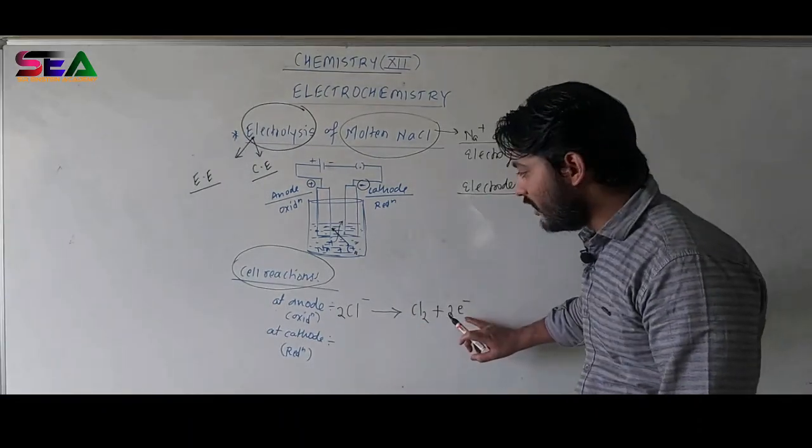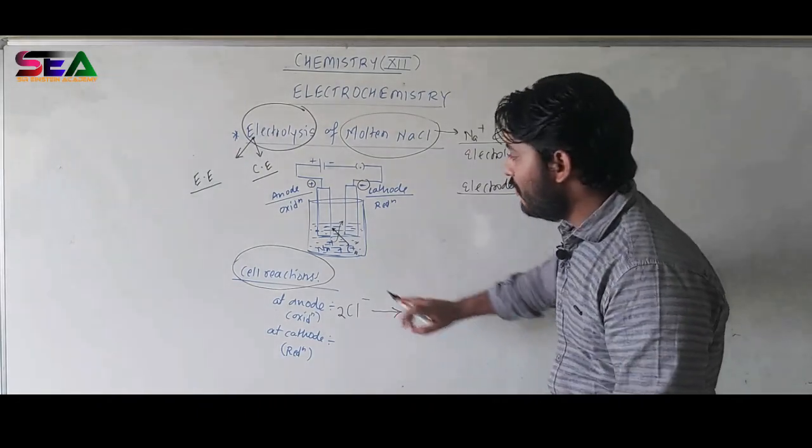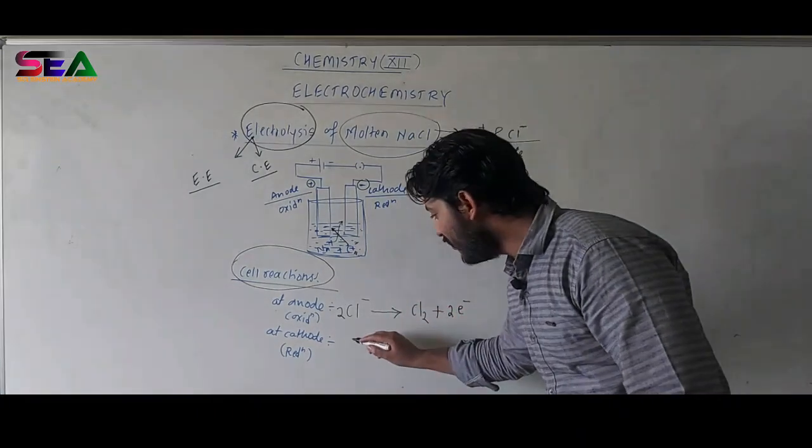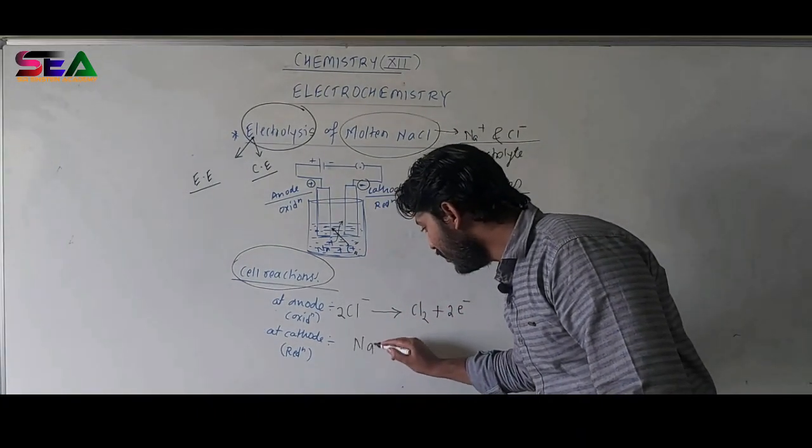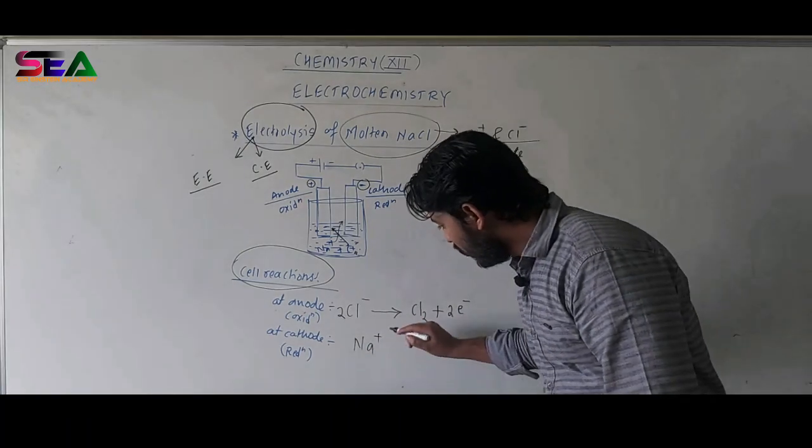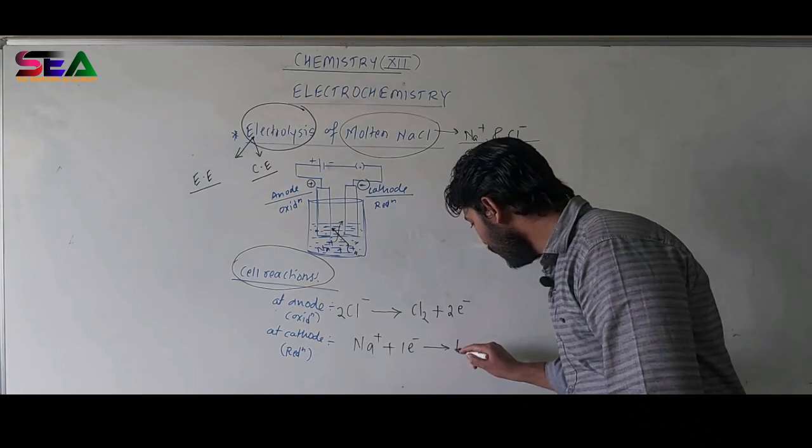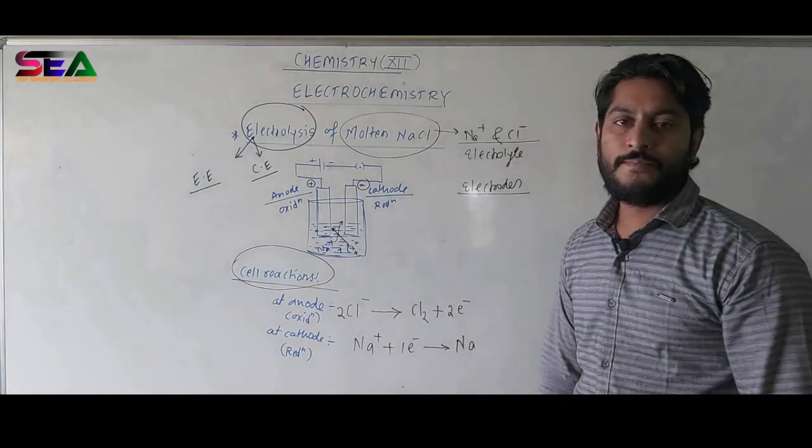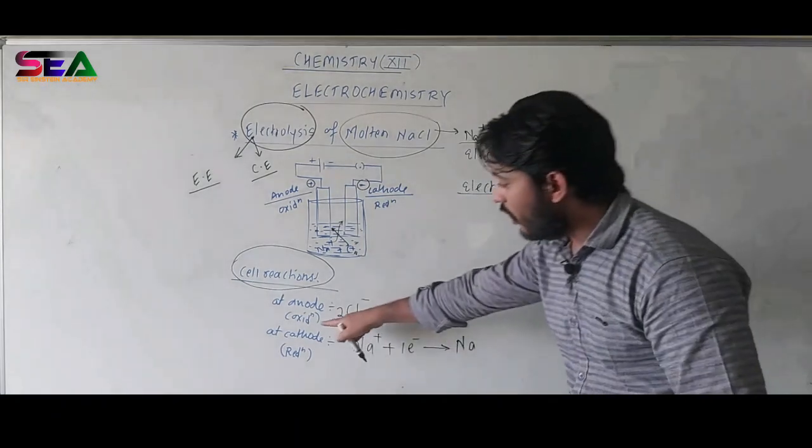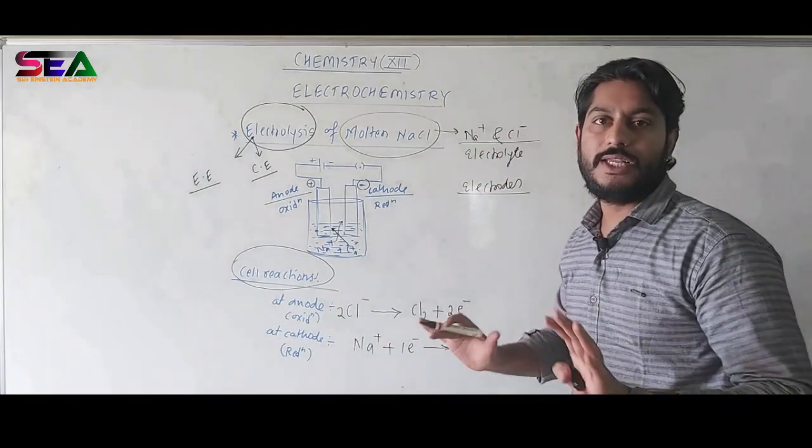Now, these two electrons will be absorbed in the process of reduction. So, how it will occur? Sodium plus. It is a monovalent ion. It will take one electron and it will give you Na. So, these are all about oxidation and reduction reactions occurring inside the cell.